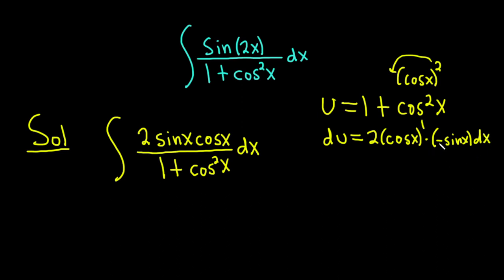So we have this negative here, so let's maybe multiply both sides by negative 1 so it comes over here. This is negative du equals, I'm going to write it like this, 2 sine x cosine x dx.